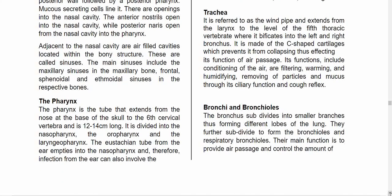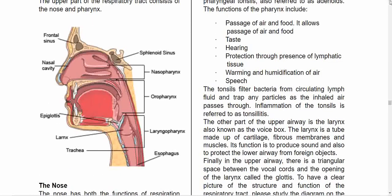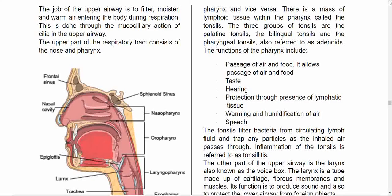The pharynx is a tube that extends from the nose to the base of the skull to the 6th cervical vertebra and is 12 to 14 cm long. It is divided into the nasopharynx, oropharynx, and laryngopharynx. The Eustachian tube from the ear empties into the nasopharynx; therefore, infection from the ear can also involve the pharynx. Within the pharynx there is a mass of lymphoid tissue called the tonsils. The three groups are the palatine tonsils, lingual tonsils, and pharyngeal tonsils, also referred to as the adenoids.